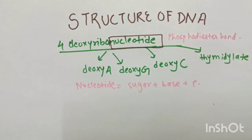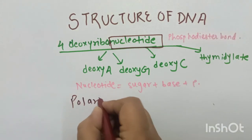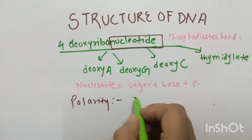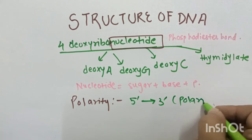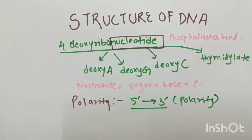Now, we will see the polarity of DNA. In case of DNA, the base sequences are written from 5' end to 3' end and this is known as polarity of DNA.